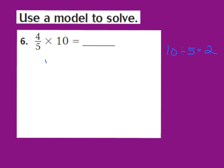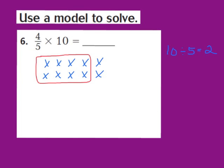So I'm going to draw the array showing the 5 equal groups with 2 in each group: group 1, group 2, group 3, group 4, and group 5. Now I identify the numerator in my fraction — in 4/5ths the numerator is a 4. So I need to circle 4 of the 5 equal groups of 2: group 1, 2, 3, 4. Now I count the circled X's: 1, 2, 3, 4, 5, 6, 7, 8. So 4/5ths times 10 equals 8, and 8 becomes the product.